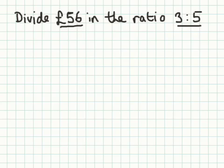The first step is to look at your ratio and add it together. So 3 add 5 gives you 8. So I know I'm going to have to divide £56 into 8 parts.